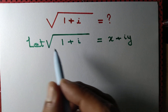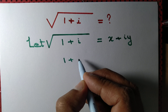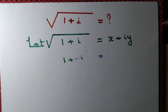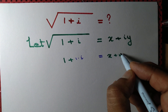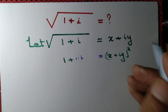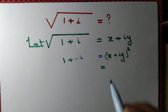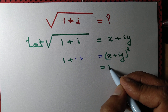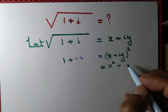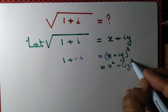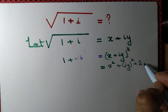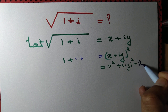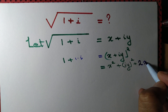Now we want to remove this root, so we square both sides to obtain 1+i = (x+iy)². We know the formula for (a+b)² = a² + 2ab + b², where a is x and b is iy.